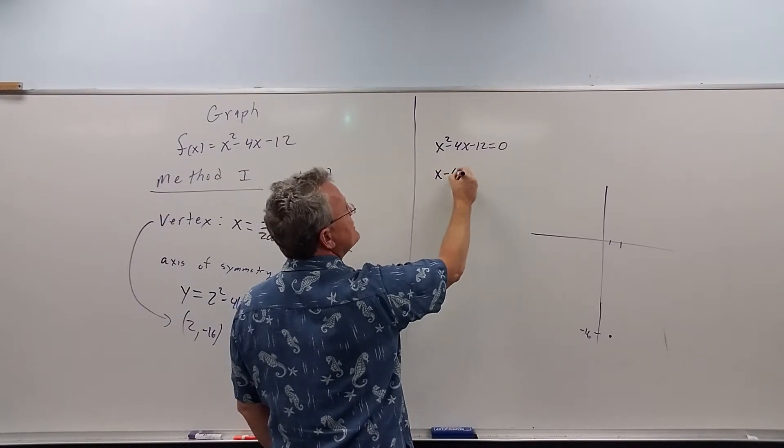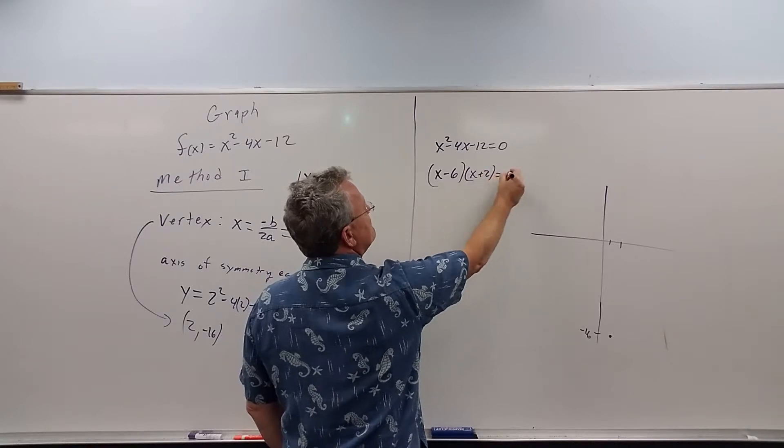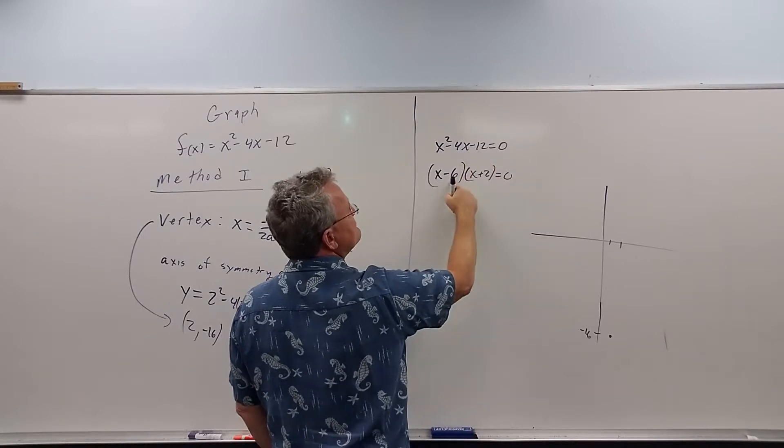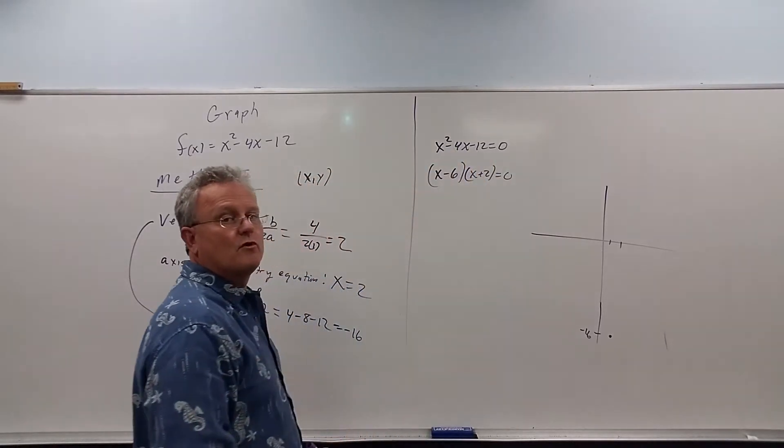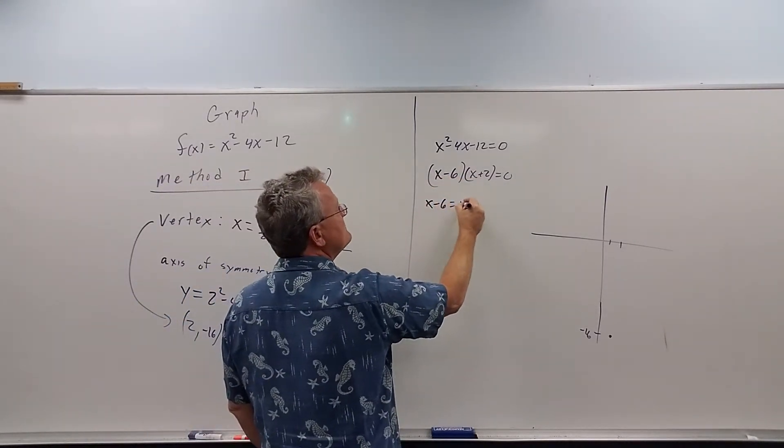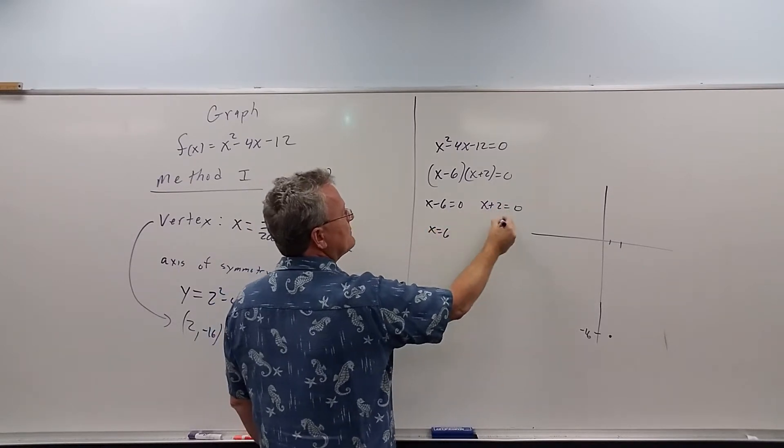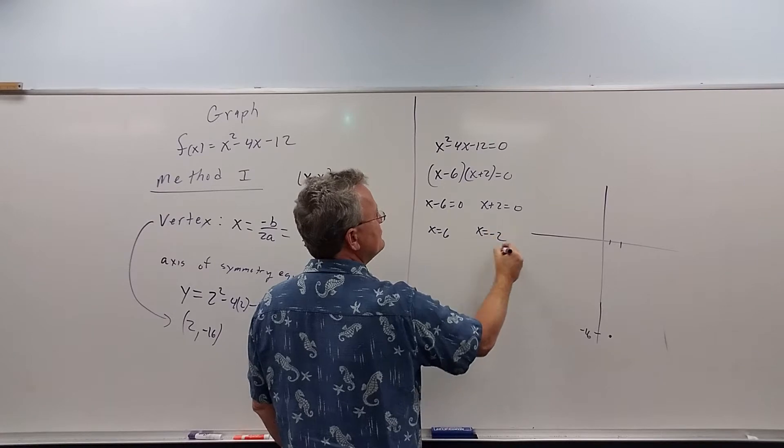and our two numbers are negative 6 and positive 2, multiply to negative 12, but they add to negative 4. When I set each of these equal to 0 and solve, here we get x equals 6. Here we get x equals negative 2.